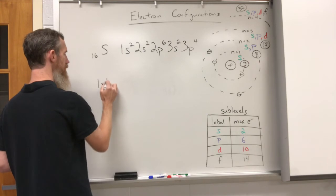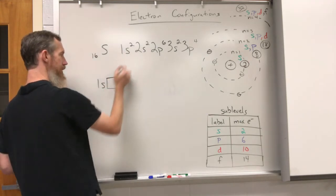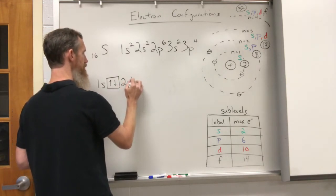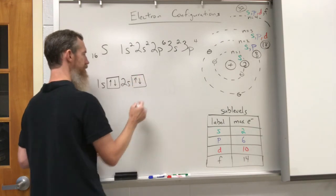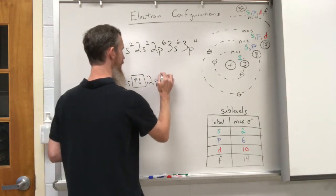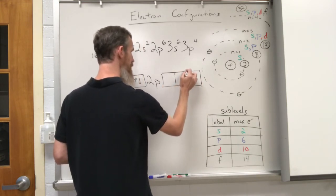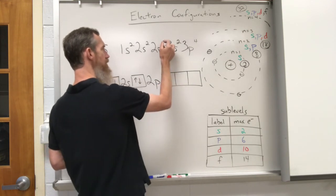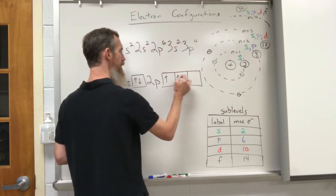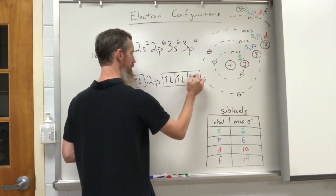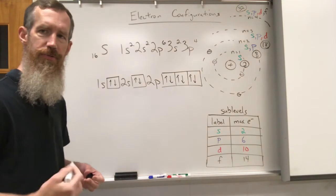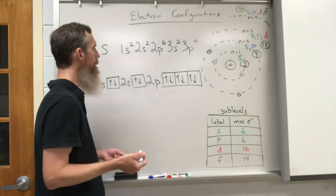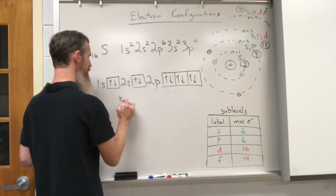Now I can do the orbital diagram — it's a pain because you're drawing a lot of boxes and arrows. For 1s: up and down. For 2s: up and down. For 2p: I draw all three orbitals. Even though I know the whole thing is filled, the way I do it is up, up, up — all ups first — then down, down, down. Because all the up spins must fill first, then down spins. I'm out of room here so I'll continue it down as another part of the line.